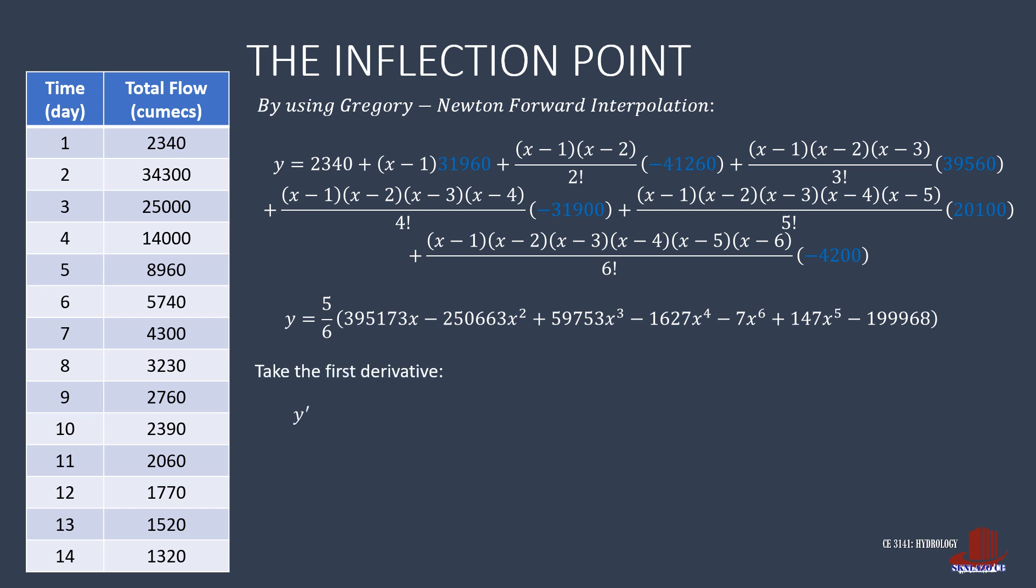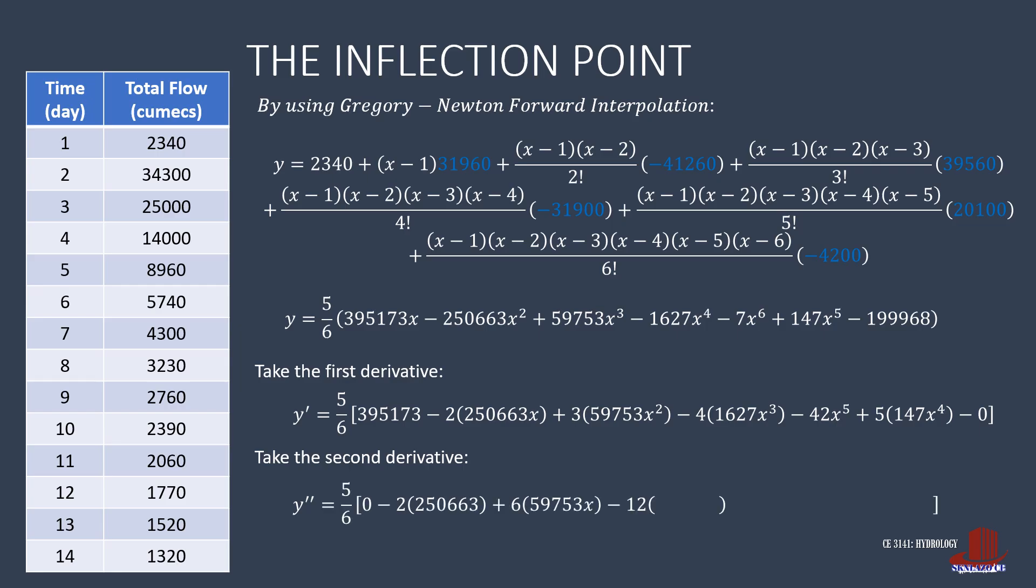In order to take the inflection point, we should take the first derivative of y, creating y prime as 5/6 of 395,173 less 2 times of 250,663x plus 3 times of 59,753x squared minus 4 times 1,627x cubed minus 42x raised to 5 plus 5 times 147x raised to 4 minus 0. Next is to take the second derivative, y double prime.